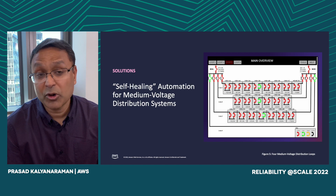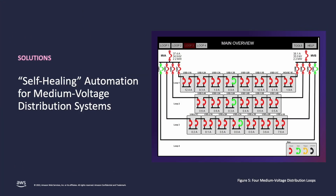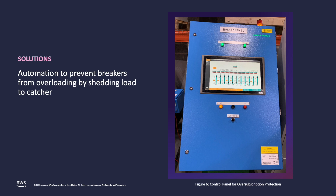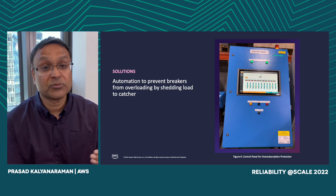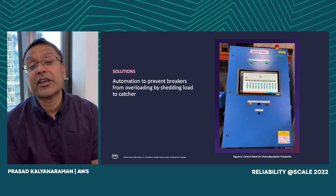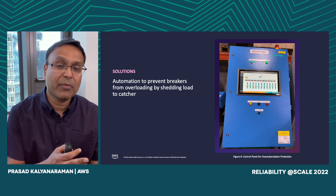Some examples of self-healing systems we've built: we built automation that automatically switches between two medium voltage lineups for a particular feed. We also built what we internally call a backup protection system to prevent overloading — it automatically sheds some load to catcher. We pre-select a set of racks that can automatically move to catcher if we see any oversubscription, ensuring we never drop IT load. This in-house automation moves power from primary to backup automatically.